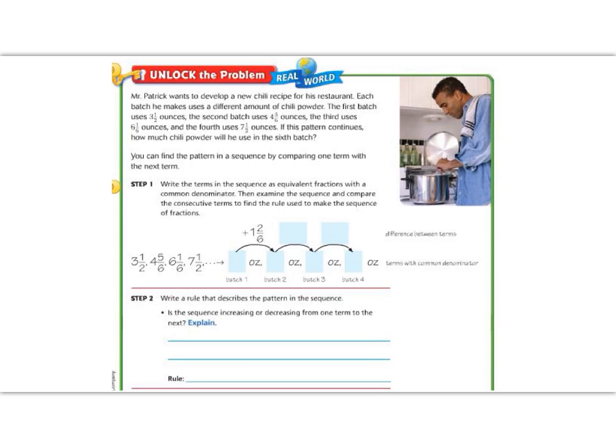The first batch uses 3 1/2 ounces. The second batch uses 4 5/6 ounces. And the third batch uses 6 1/6 ounces. And the fourth batch uses 7 1/2 ounces. If this pattern continues, how much chili powder will he use in the sixth batch? Now that we know our question, and we can see here we've got a pattern, we know that we need to find a rule and then continue finding the terms.